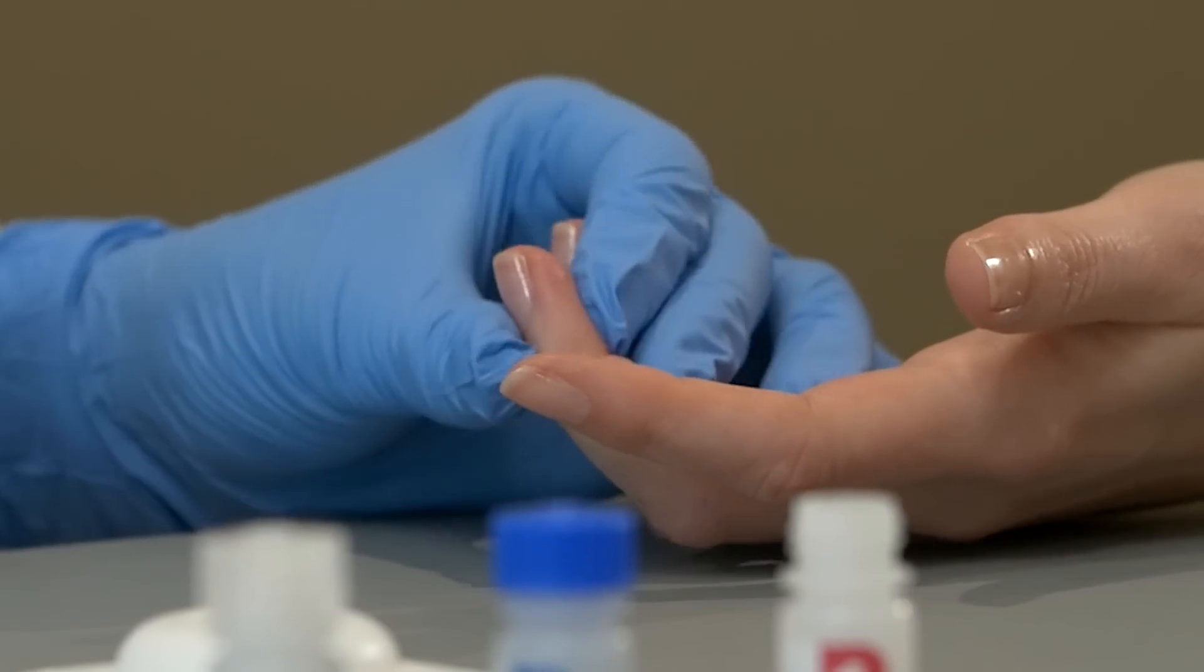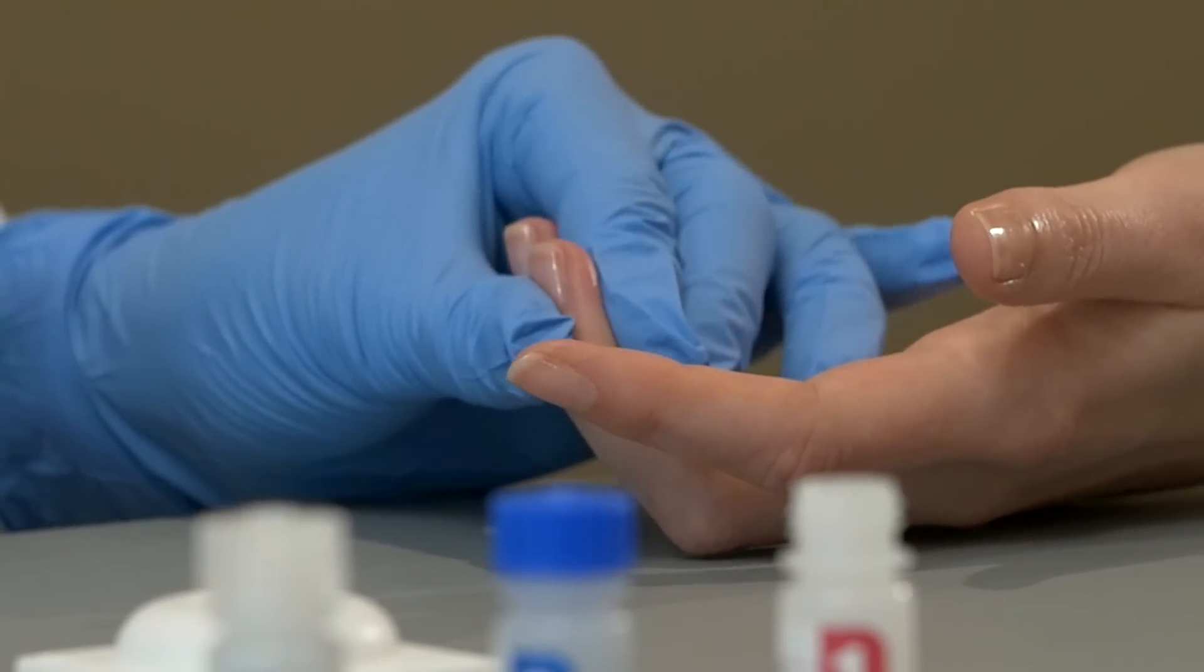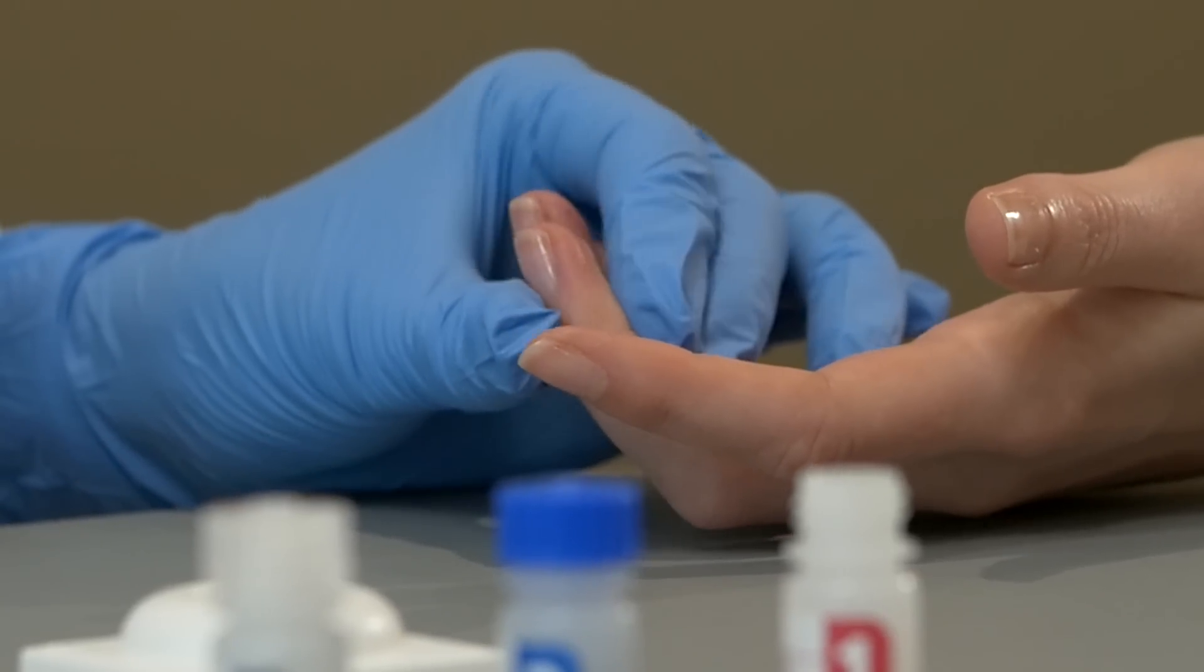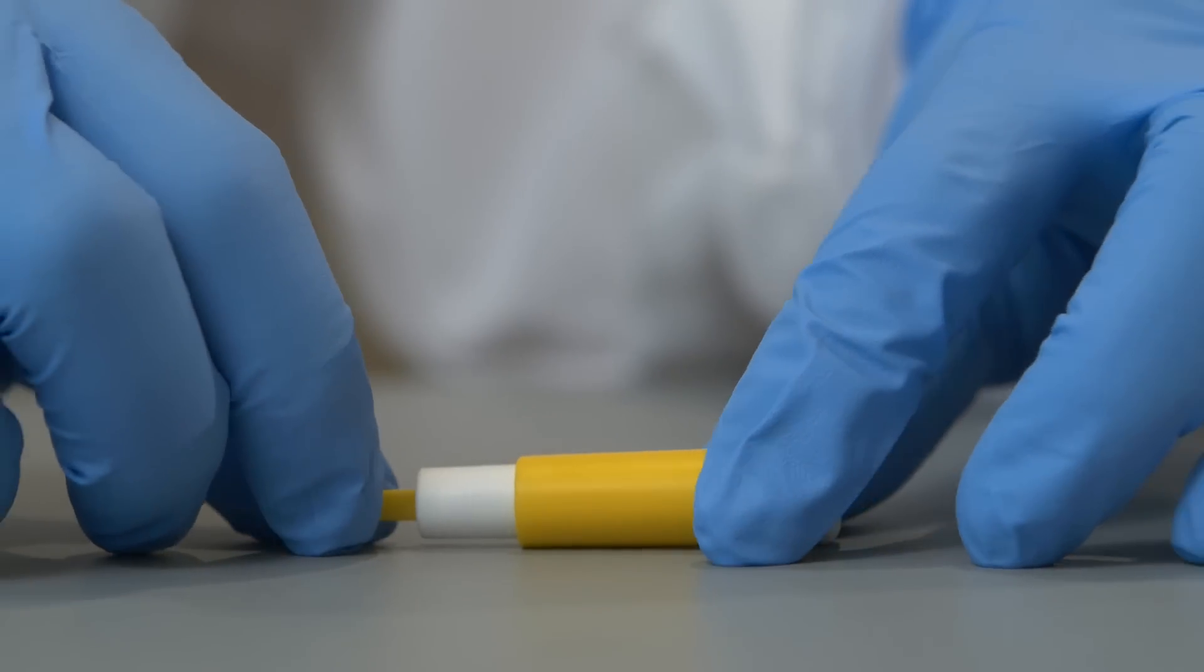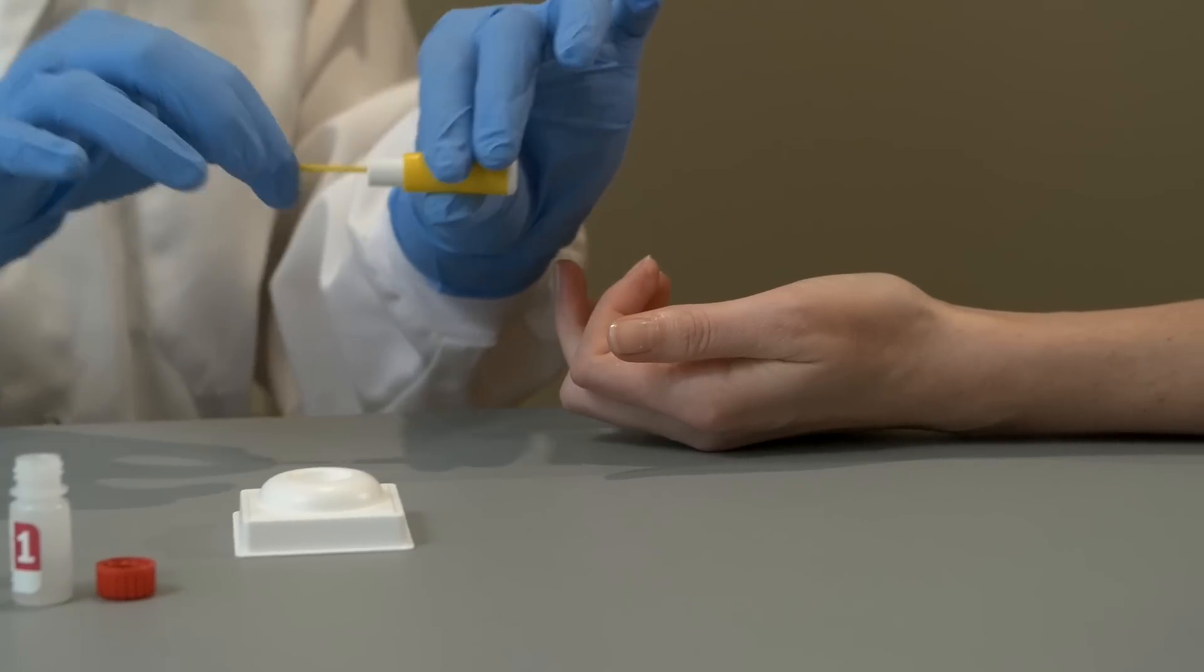Massage the patient's finger in one motion towards the tip to allow the blood to move to the surface. The fingertip will become slightly pink. As soon as the finger is dry, twist and remove the protective tab from the lancet.